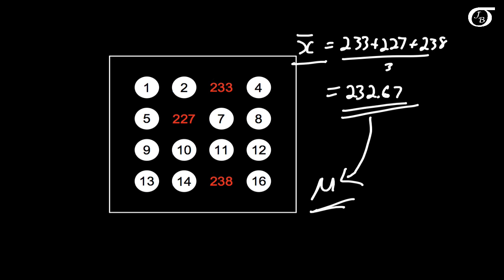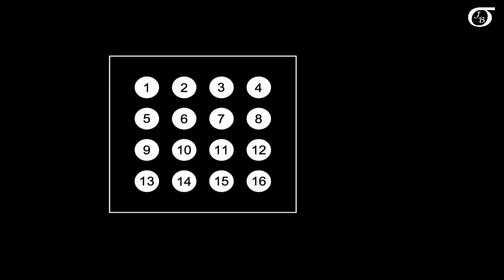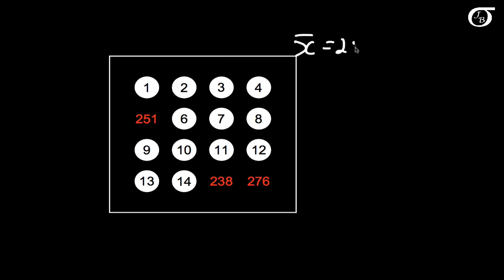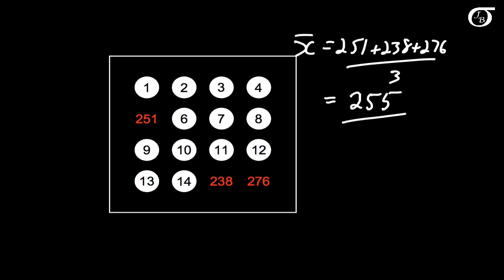Related to that is the idea that if we were to draw another sample, we would be very unlikely to get this sample mean again — the sample mean is going to vary from sample to sample. Here are our 16 students again. We draw a random sample of size 3 and get ages of 251, 238, and 276. We calculate the sample mean by adding them up and dividing by 3, and this time we get a sample mean of 255. Had we gotten this sample, we would use this value to estimate the unknown mu. Note that this sample mean was different from the one in our first sample.